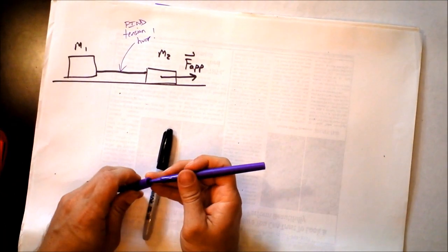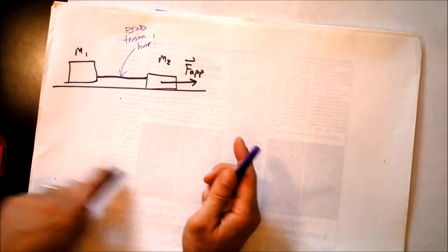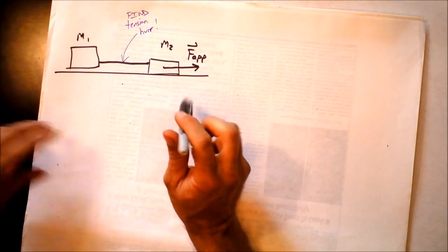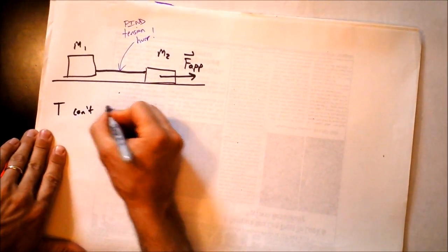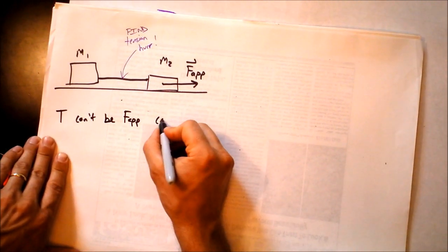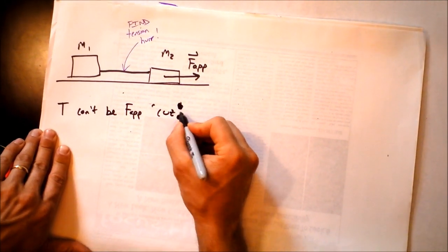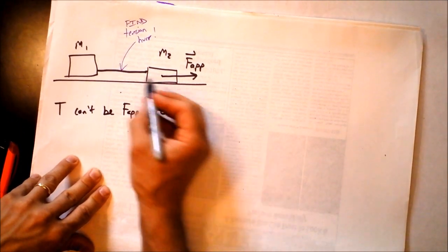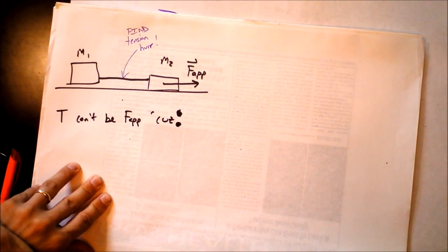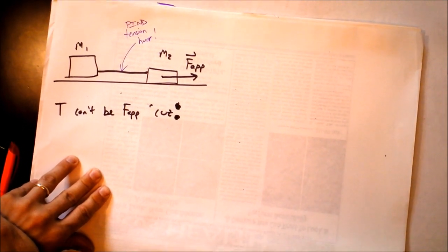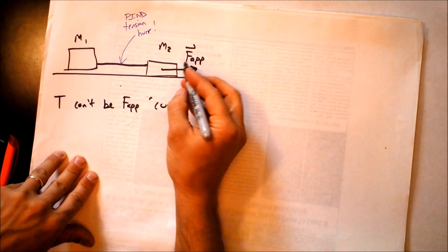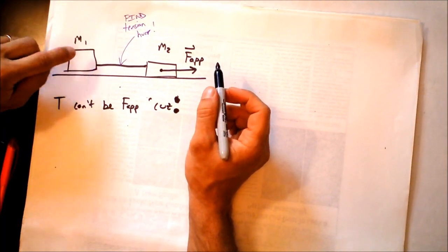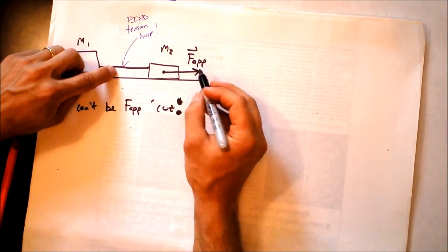How are you going to find the tension in that rope? Let's first address one of the most popular misconceptions for this problem. Somebody might say the tension in this rope is equal to the applied force. T can't equal F_applied because the applied force is acting on the system, but the tension is only acting to accelerate one of the two blocks — M1. The applied force accelerates the entire system, but the mass of the system and the mass of M1 are different, so the tension must actually be less than the applied force.